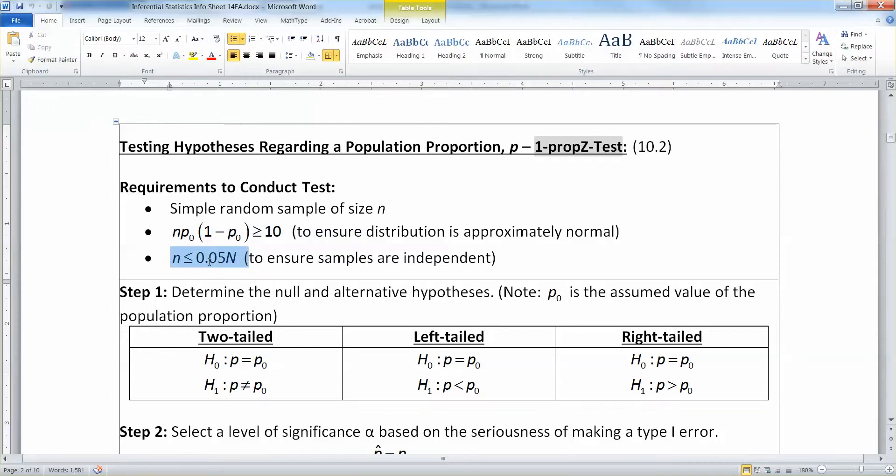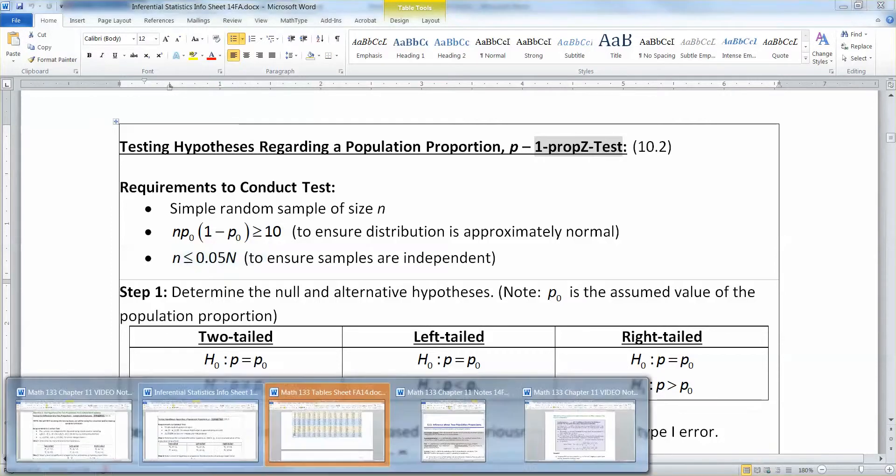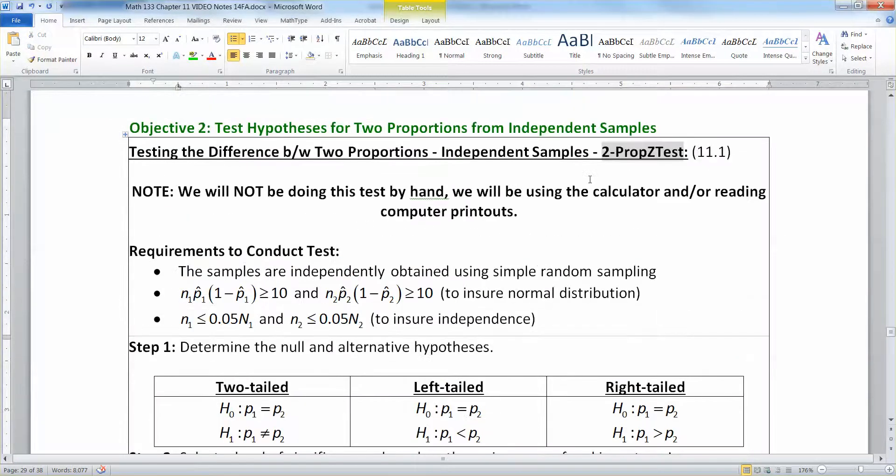Similarly we had this n less than or equal to 0.05 capital N but only one of them because you were only working with one single proportion, one single sample. But now we're dealing with the difference between two groups, the proportion of men that think this and the proportion of women that think this, that kind of thing.